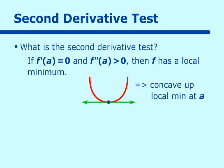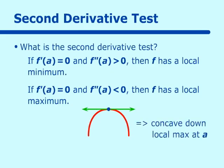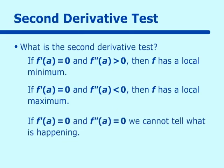The second part states: if f prime equals zero and f double prime is less than zero, then f has a local maximum at a. That means we have a horizontal tangent line and the function is concave down, giving us a local max. However, if f prime equals zero and f double prime also equals zero, we cannot tell anything — we don't know whether it's a point of inflection or something else.